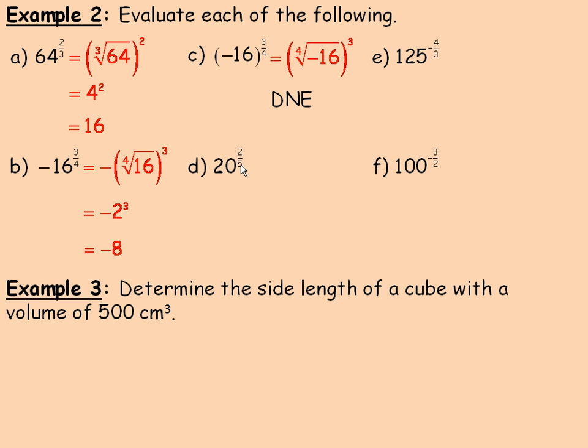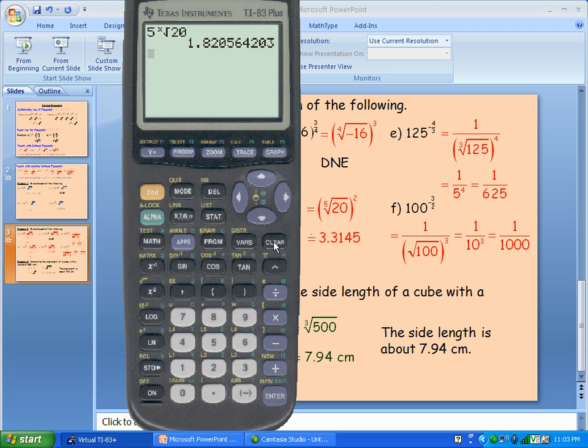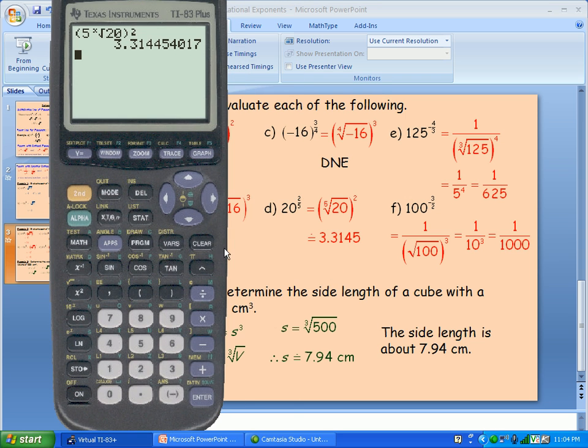For D, 20 to the power of 2 fifths means the 5th root of 20 squared. Now again the 5th root of 20 we can't evaluate that as a whole number, and so I would go back to my calculator. And so now we could actually find the 5th root of 20 and then squared. That is what it would look like in my graphing calculator. And there is my 3.3145. Now you actually could do this too. You could actually evaluate 20 to the power of and type in 2 fifths. So we would just go 2 divided by 5, and that will give you the same thing.